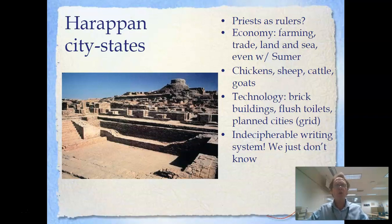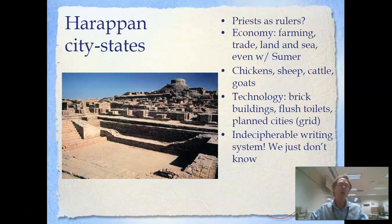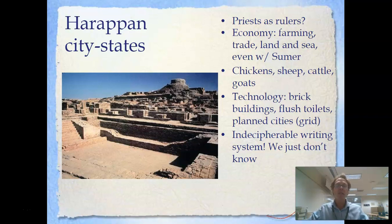The reason we don't know too much about the Harappan city-states is that although they do have a system of writing — pictograms — we have not been able to decipher them. In Mesopotamia with cuneiform, and in Egypt with hieroglyphs, we are able to read those. But with this Harappan writing, we just don't know what these things mean, which is why we don't know, for example, who was in charge or very much about their history.